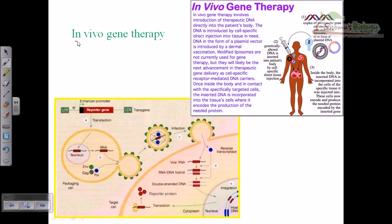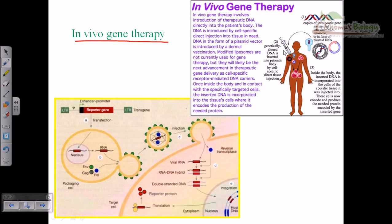Now let us talk about in vivo gene therapy. In vivo gene therapy involves directly injecting a normal copy of the gene inside someone's body. This direct insertion could be via the injection process or via viral infection — we can utilize a virus for direct infection or do it via injection.